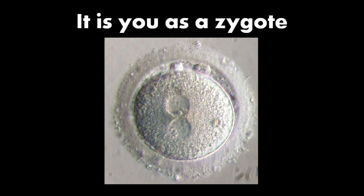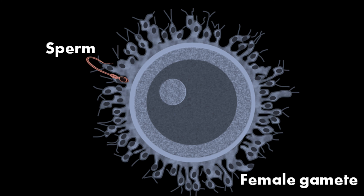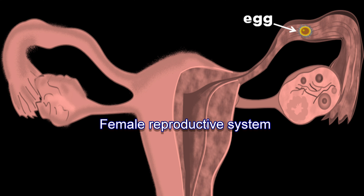The male gamete, called sperm, fuses with the female gamete to form the zygote. This event is called fertilization. In humans, fertilization takes place inside the female reproductive system, so it is internal fertilization.